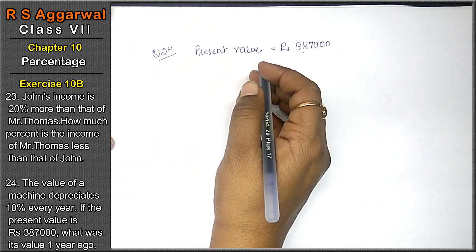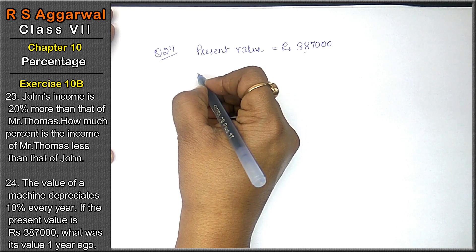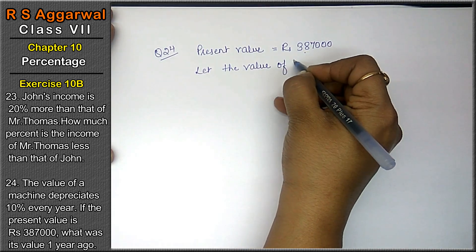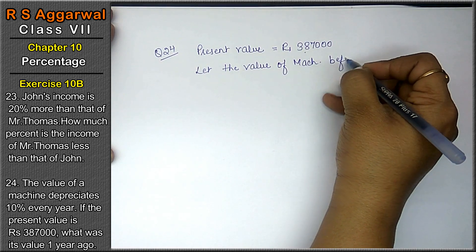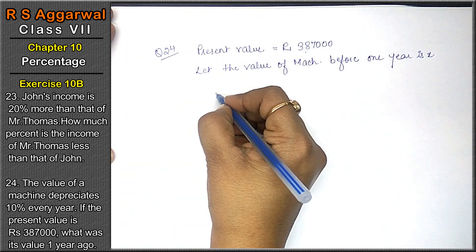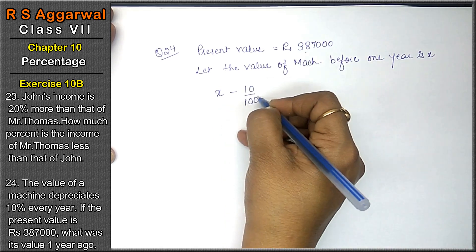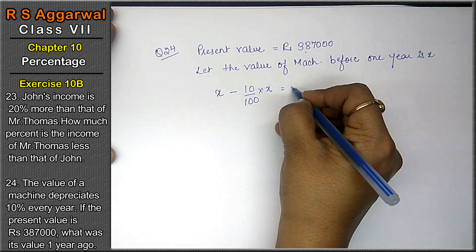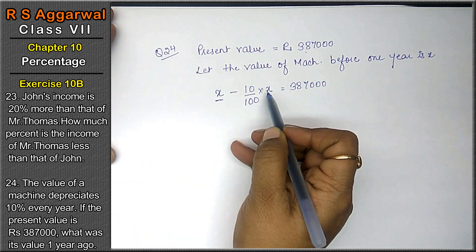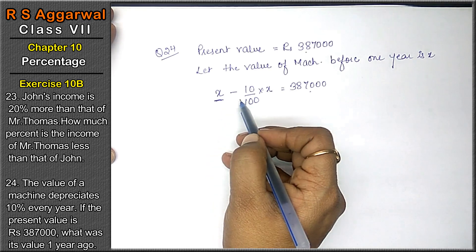Present value one year ago. Let the value of machine before one year is x. So x ki value me se minus depreciate, means decrease, 10% every year x ka.